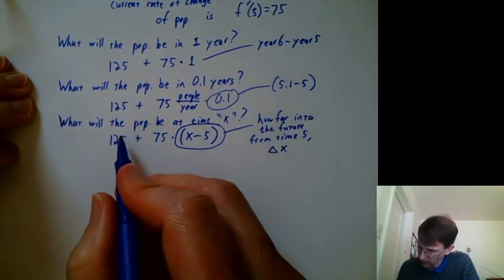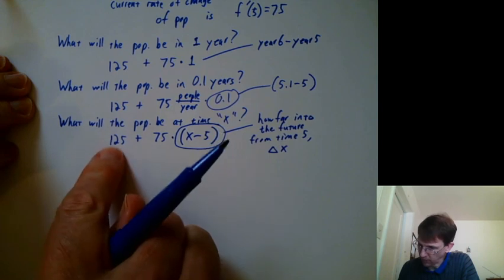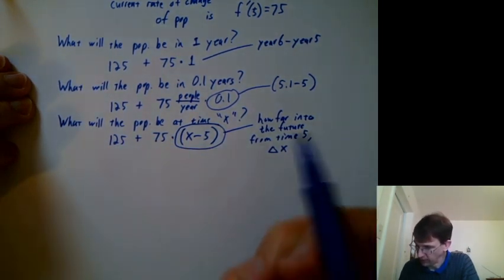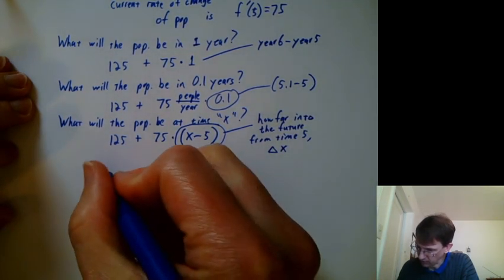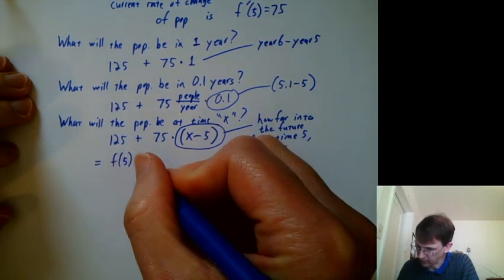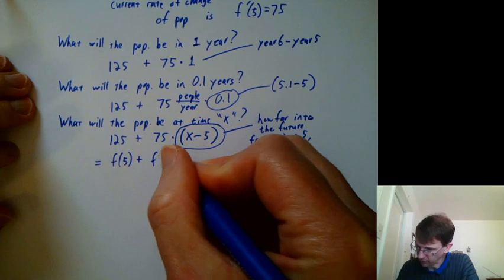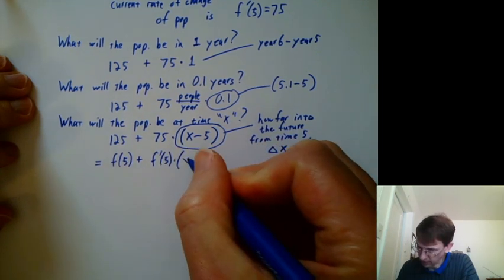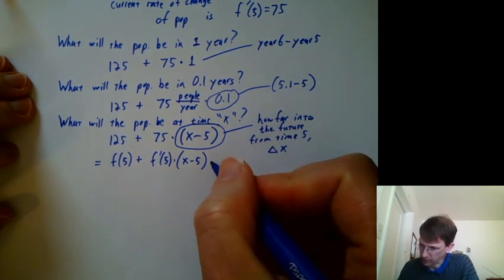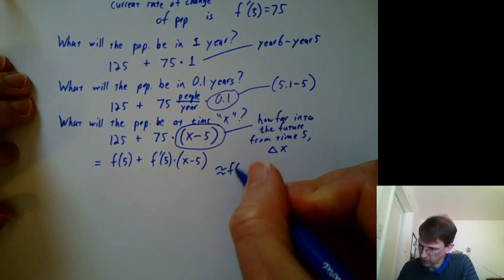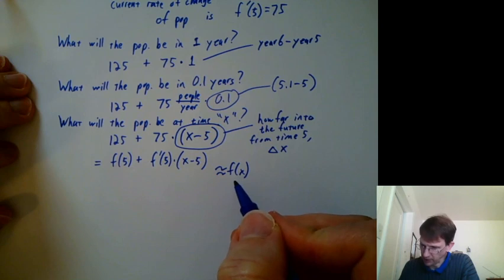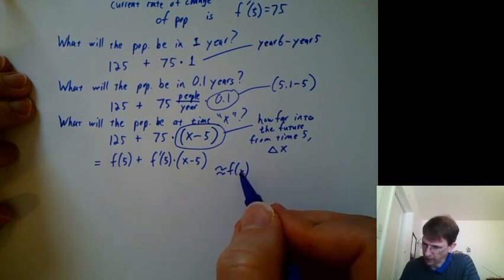So we're saying the population at some time in the future is the population now plus the rate of change times how far into the future. We've already called that the calculus prediction equation. But we can write it back in terms of our generic terms. 125 is f of 5. 75 is f prime of 5 times x minus 5. And we're hoping that that's approximately equal to f of x. Now, this is a linear function and f of x is probably nonlinear. So they probably won't be exactly equal at time x.